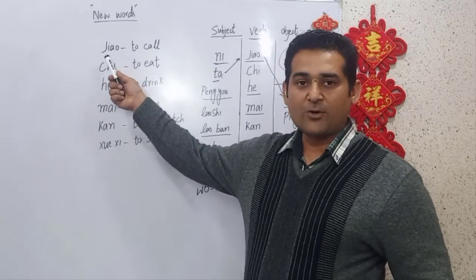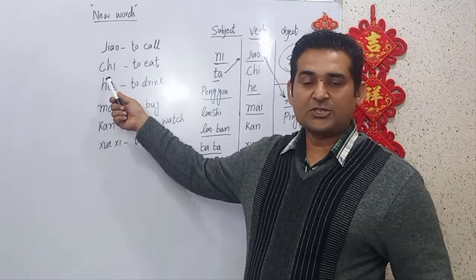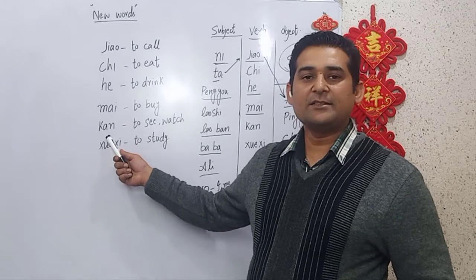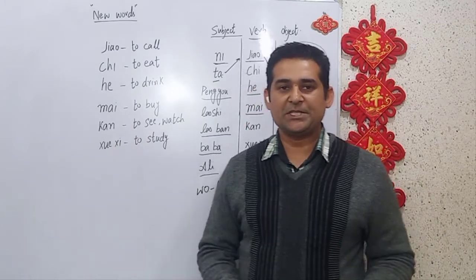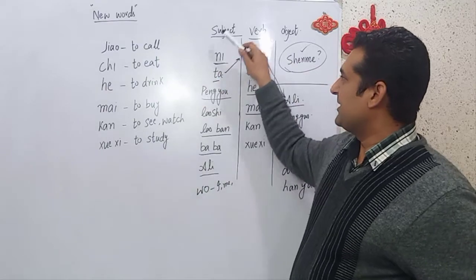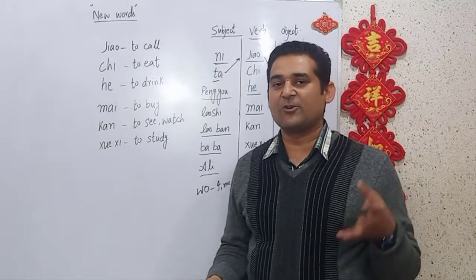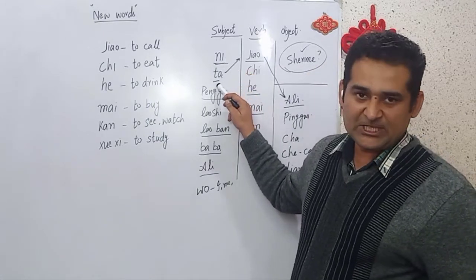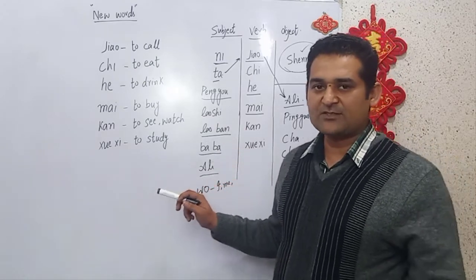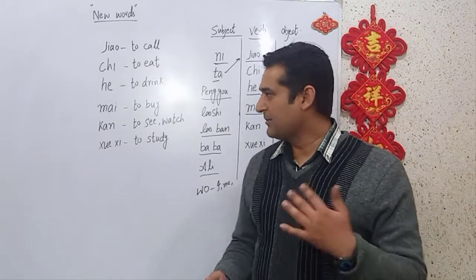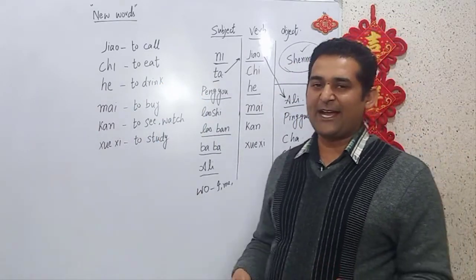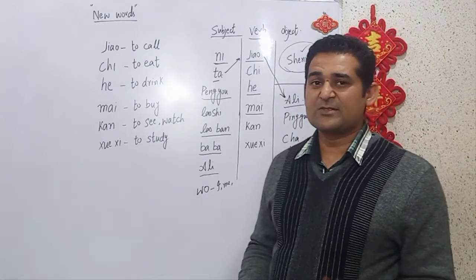Here are the new words we learned in lesson one and lesson two: jiao means 'to call', chih means 'to eat', he means 'to drink', mai means 'to buy', khan means 'to see/watch', and shui xi means 'to study'. The subjects include: ni means 'you', ta means 'he/she/it', pang yu means 'friend', laoshi means 'teacher', laoban means 'boss', papa means 'father', and wo means 'I/me'.